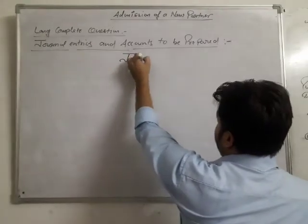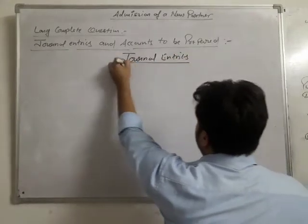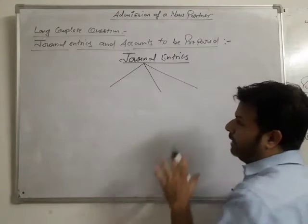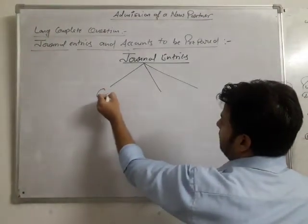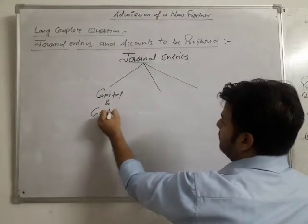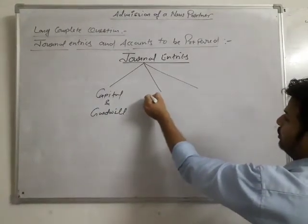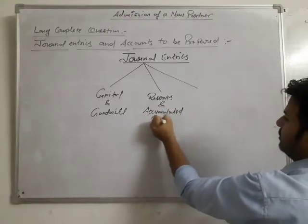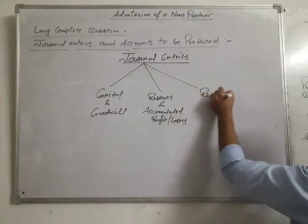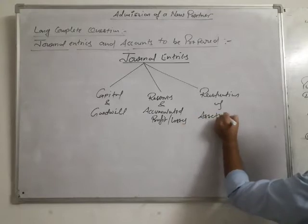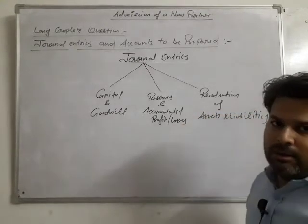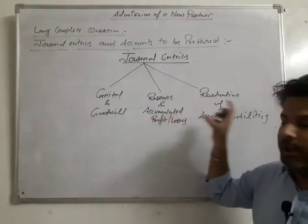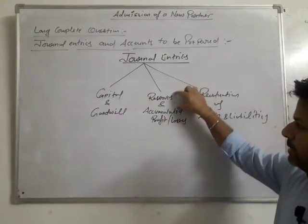First of all we are going to discuss journal entries — journal entries at the time of revaluation at the time of admission of a partner. We can divide entries into: entries related to capital and goodwill that a new partner brings into the firm, entries related to reserves and accumulated profits or losses, and entries related to revaluation of assets and liabilities. These are the common entries which are to be passed in every question. In a long question we will get capital and goodwill entry, then reserves, then revaluation.